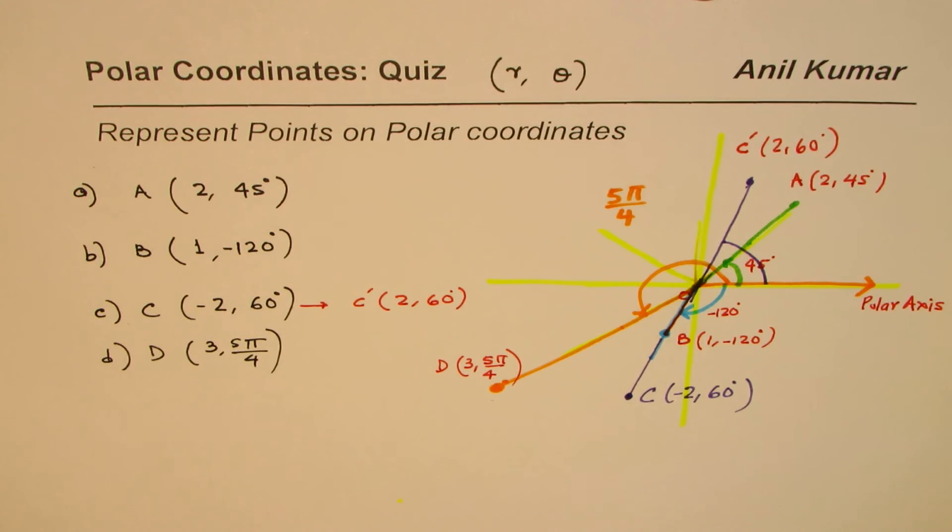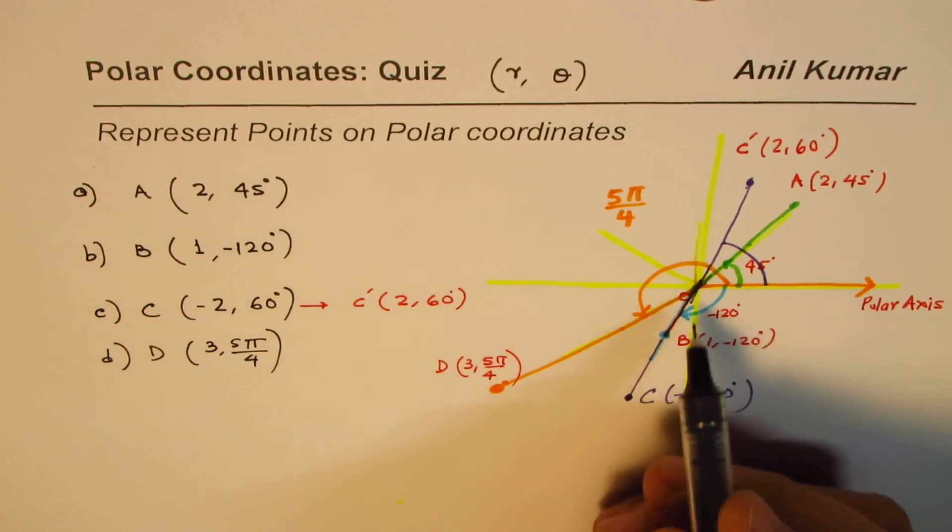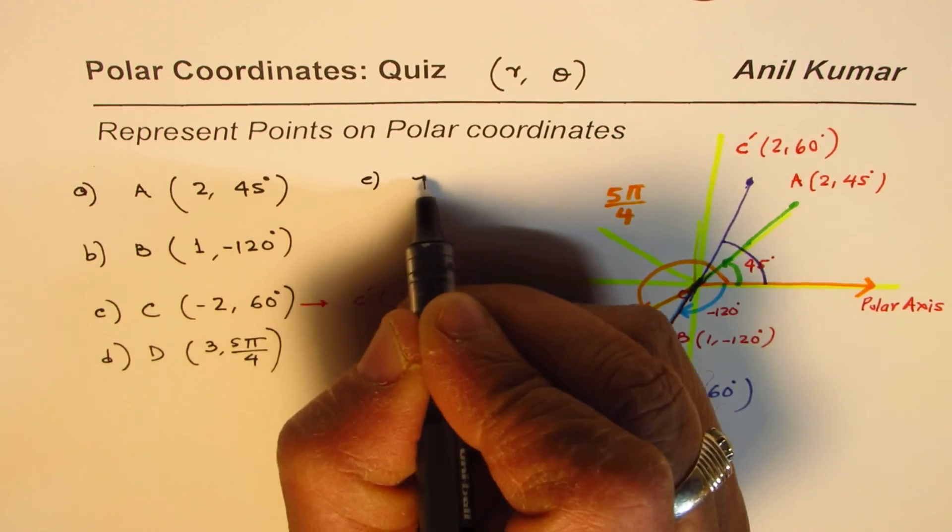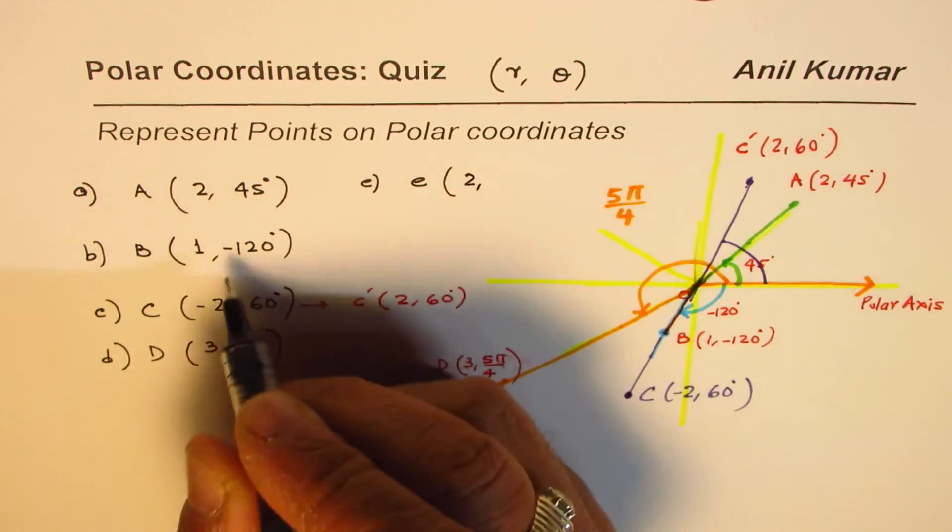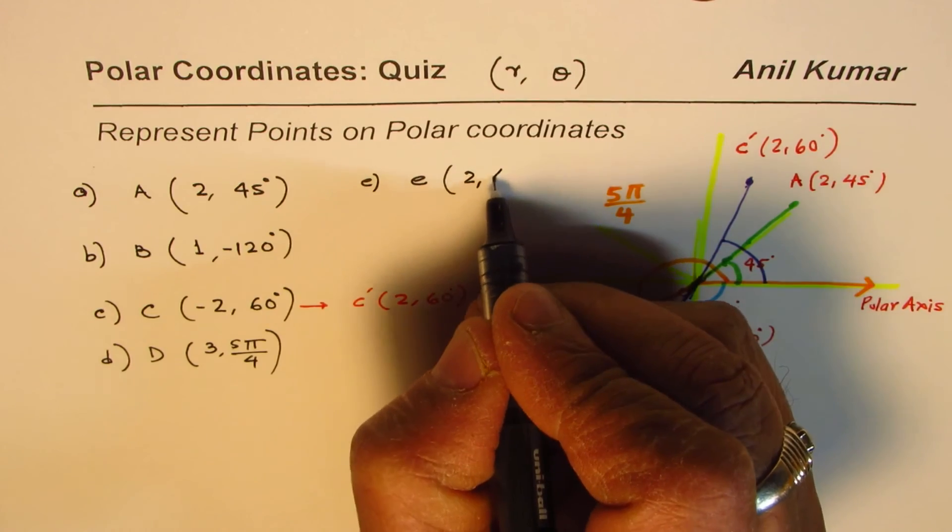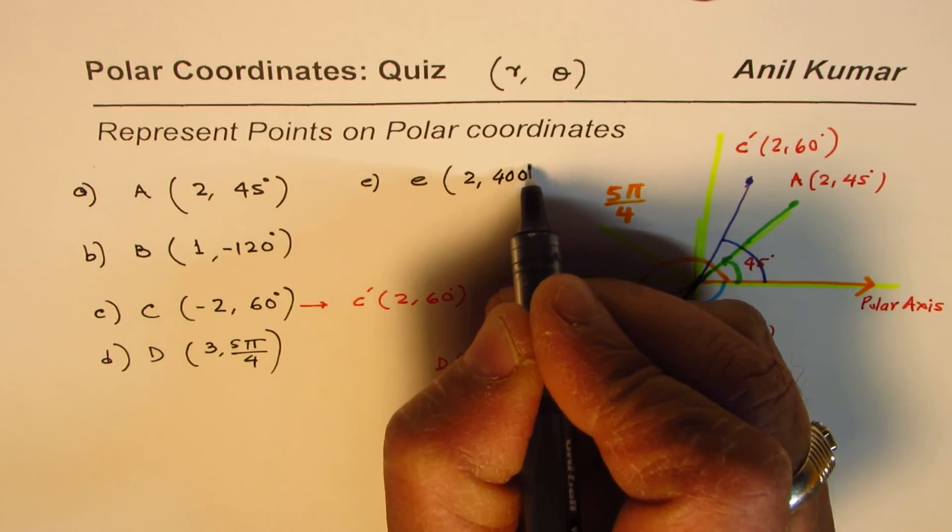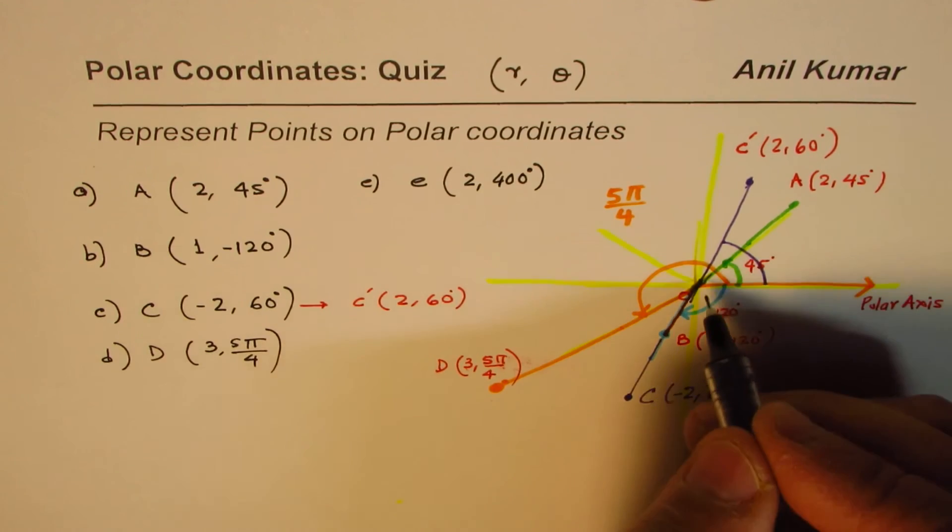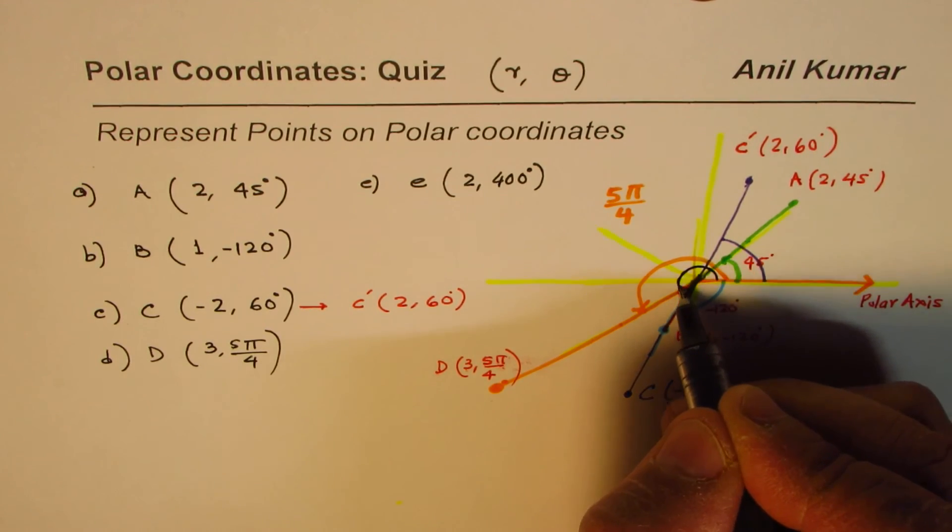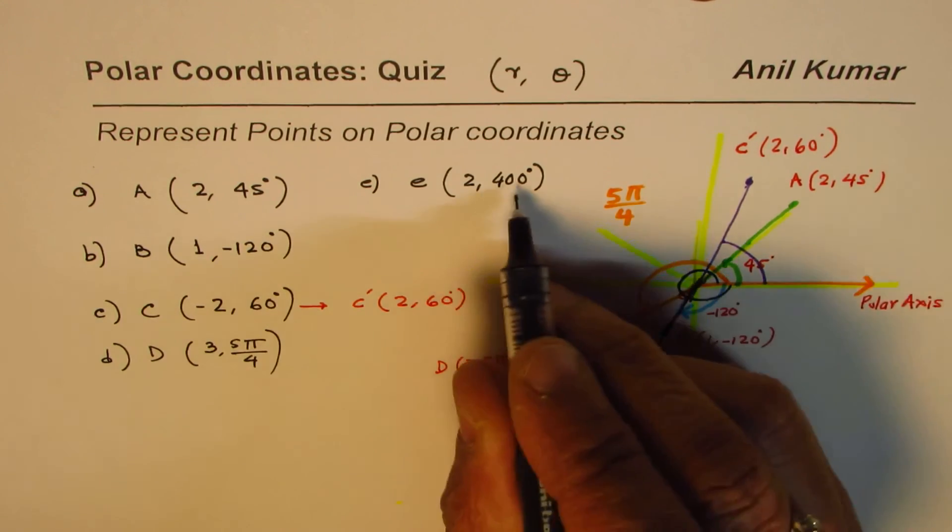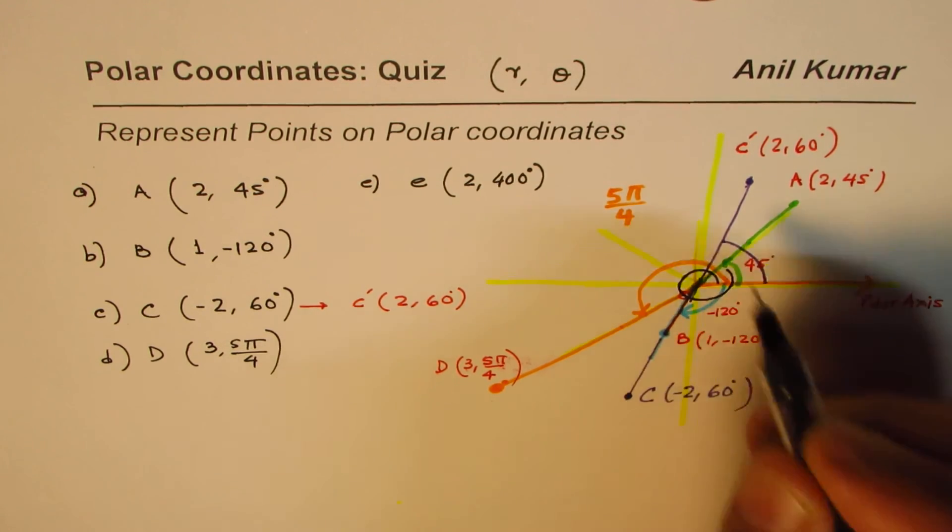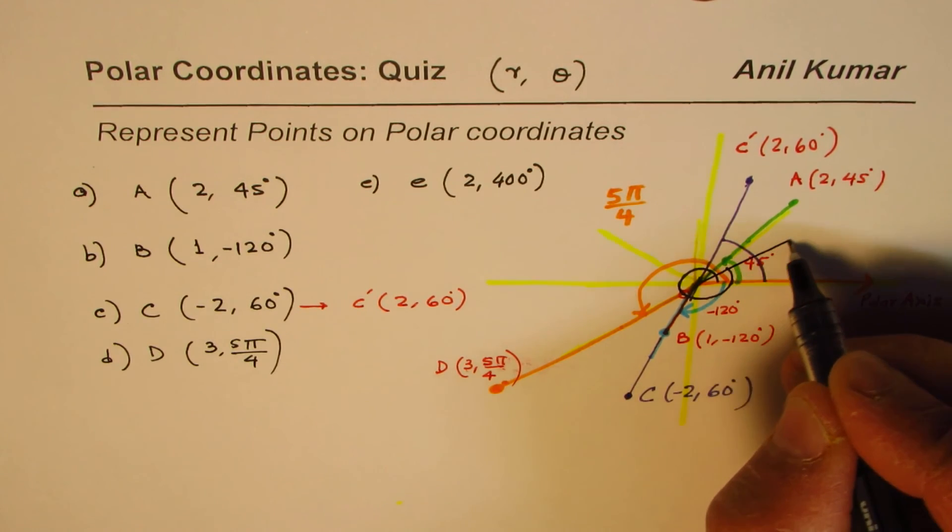Now here is a thinking question: what happens when the angle is more than 360 degrees? Let's say we have another point E, and we are saying the magnitude is 2, the angle is, let us say, 400 degrees. What do we do then? Well, we know one full circle is 360. 400 is 40 more than 360, so it will be kind of here.